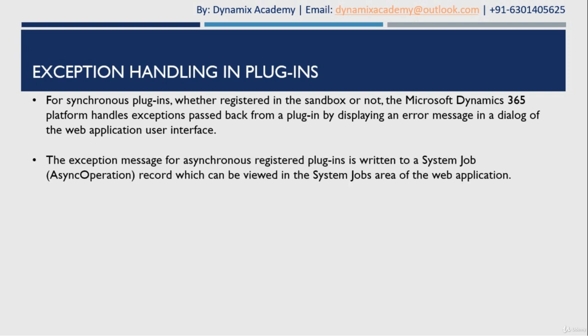But for asynchronous plugins, information regarding the exception is written into the system jobs and can be viewed in the system jobs area of the web application. If there are any exceptions raised in the asynchronous plugin, all the information related to that exception will be written into that system job. Let us now understand this with an example.